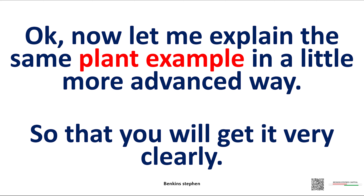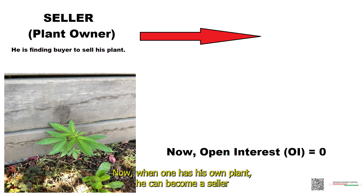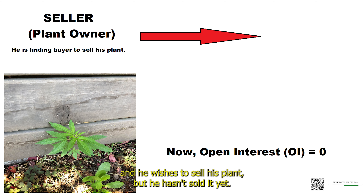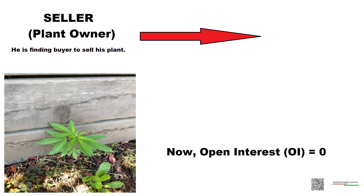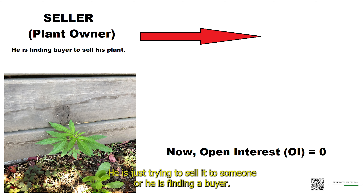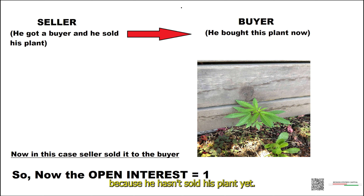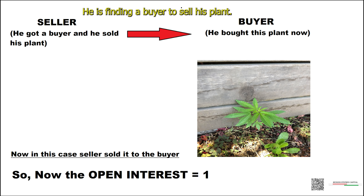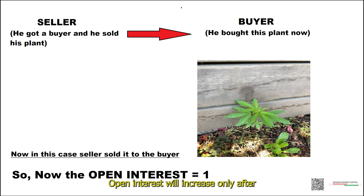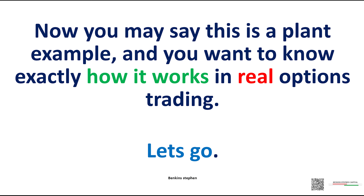Now let me explain the same plant example in a more advanced way so that you will understand very clearly. When one has his own plant, he can become a seller directly without the help of a buyer. In this scenario, he has become a seller and he wishes to sell his plant, but he hasn't sold it yet — he is just trying to sell it, or he is finding a buyer. So in this scenario, open interest will be zero, because he is finding a buyer to sell his plant. Open interest will increase only after the seller finds a buyer and the buyer buys it.